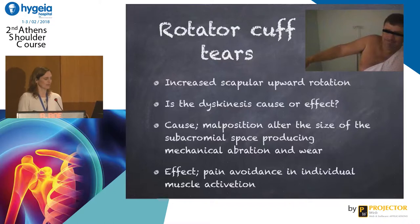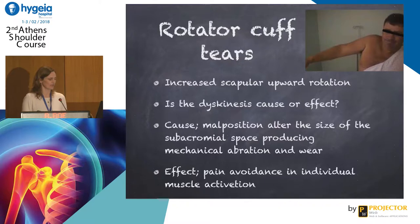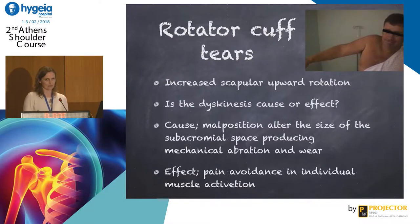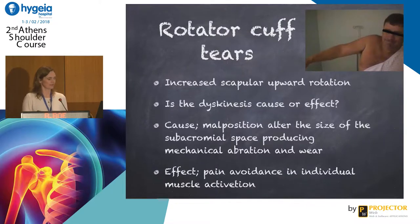In middle-aged and older people, the most common injury is the bursal-side injury of the supraspinatus. The malposition of the scapula may alter the size of the subacromial space, producing mechanical abrasion and wear. However, in athletes, the most often injury is the pasta lesion, and in this case, scapular dyskinesis might be an effect of the injury because they activate individual muscles due to pain avoidance.